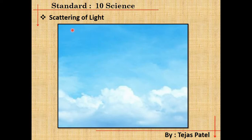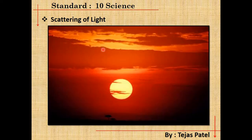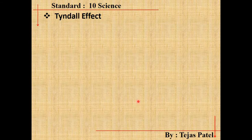The deep water inside the sea also appears blue because after scattering of light by smaller particles, only the blue color comes out. That is also the reason why the sun appears reddish during sunrise or sunset. Now we are moving on to discuss the Tyndall effect.